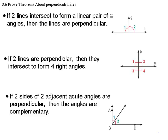We have three theorems that you need to record into your notes. First one, if two lines intersect to form a linear pair, so we're starting with a linear pair here, and if they form a linear pair of congruent angles, so angle 1 and angle 2 are congruent, then the lines are perpendicular.